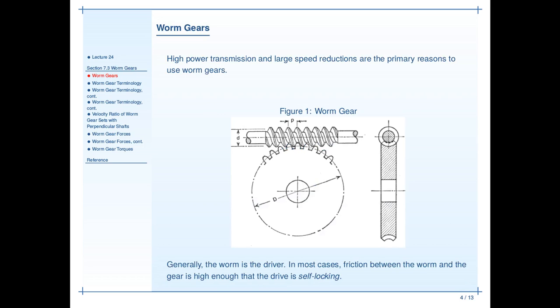Worm gears are an interesting topic. You can see a picture of one here on the screen. They're used with high power transmission in mind and generally have extremely large gear reductions. You can see a couple of interesting features about worm gears here.